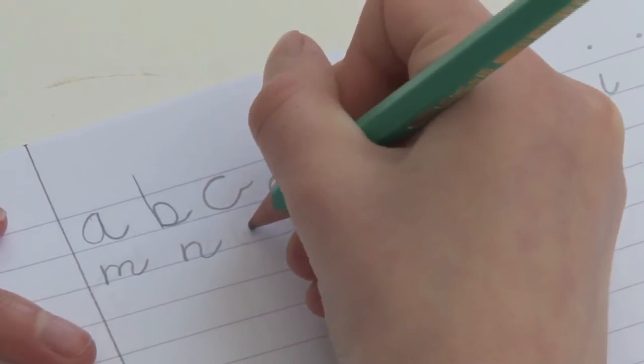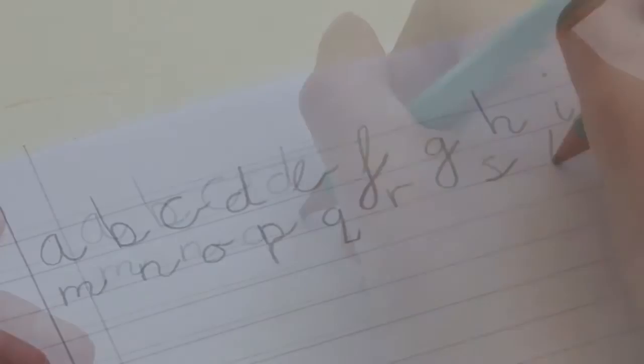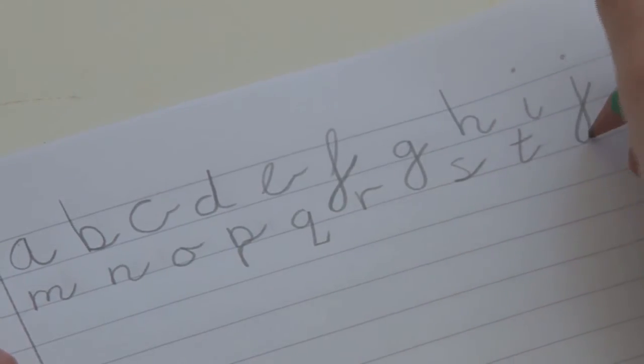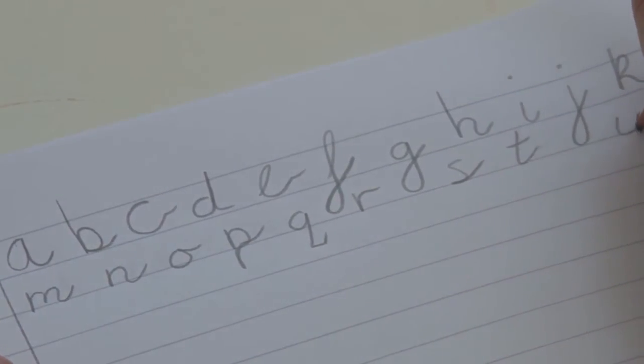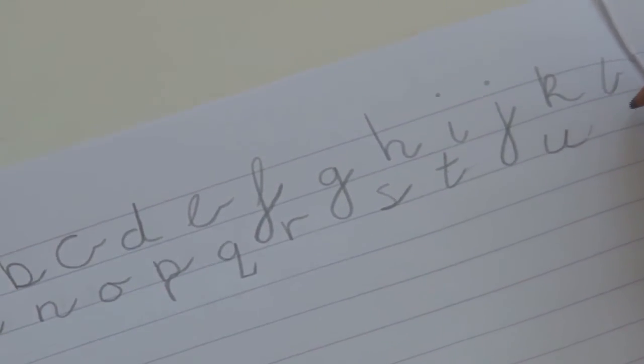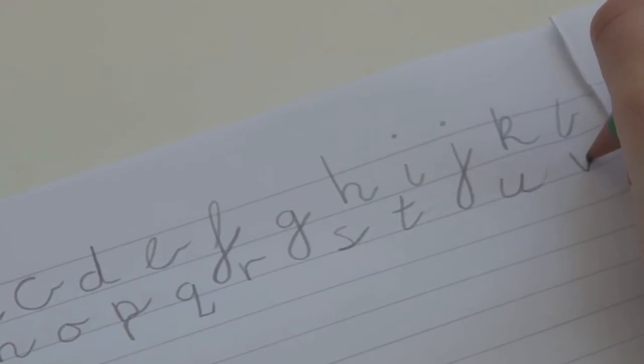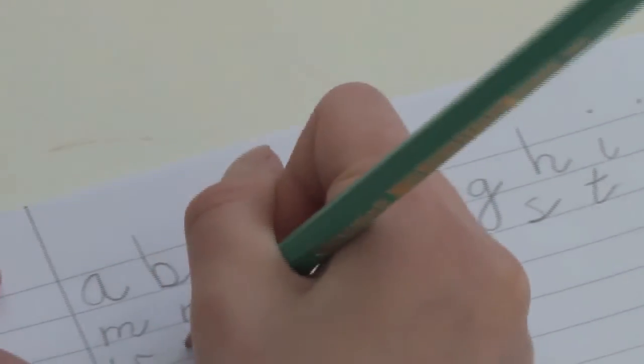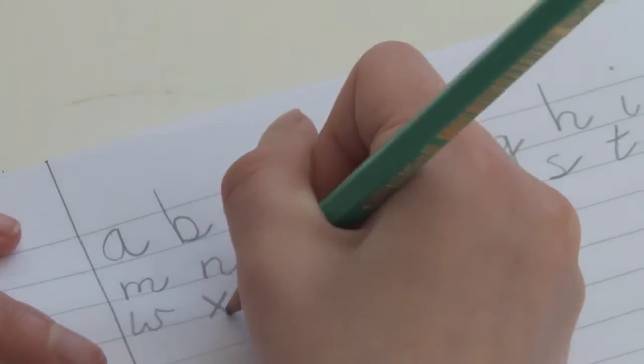If children learn a dynamic form of letters instead of the old ball and stick, which is very static, then it's very easy for them to move from one letter to the next when they have to join them.